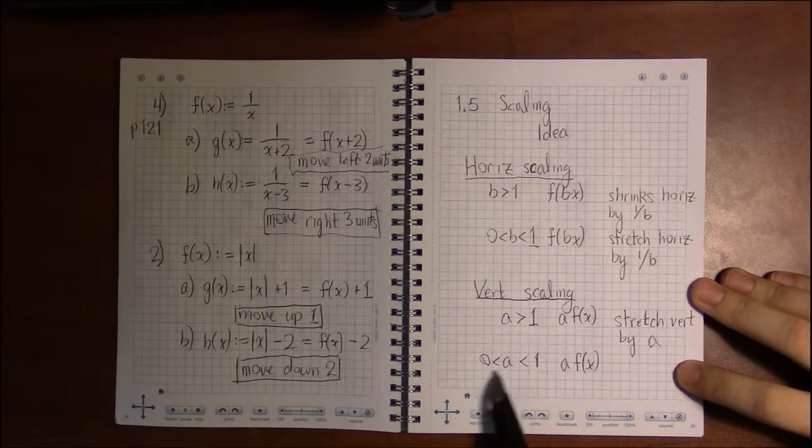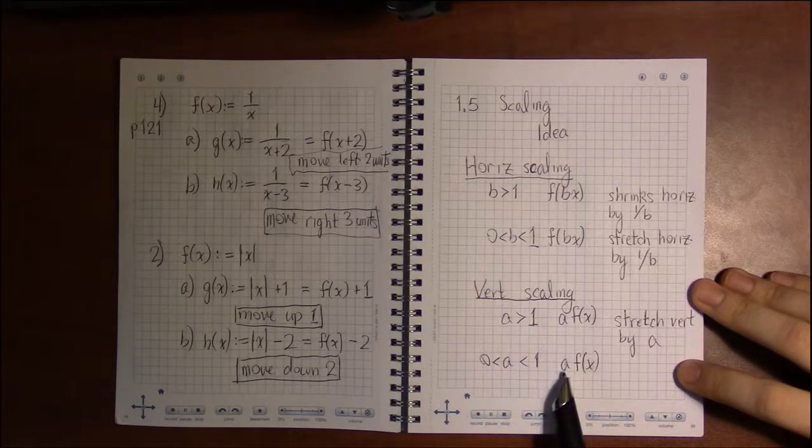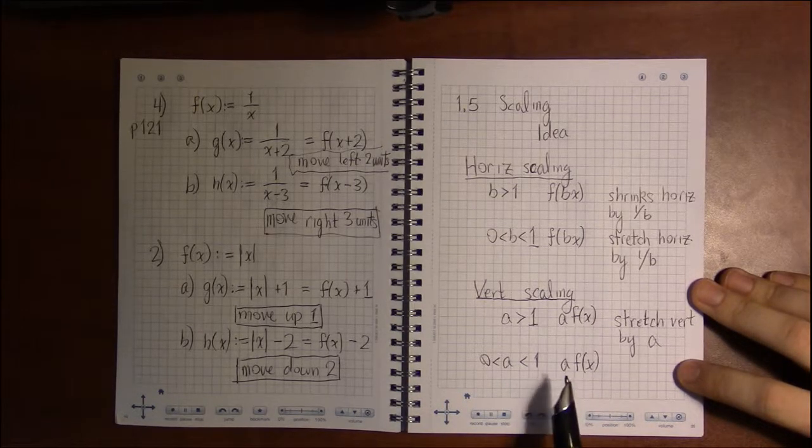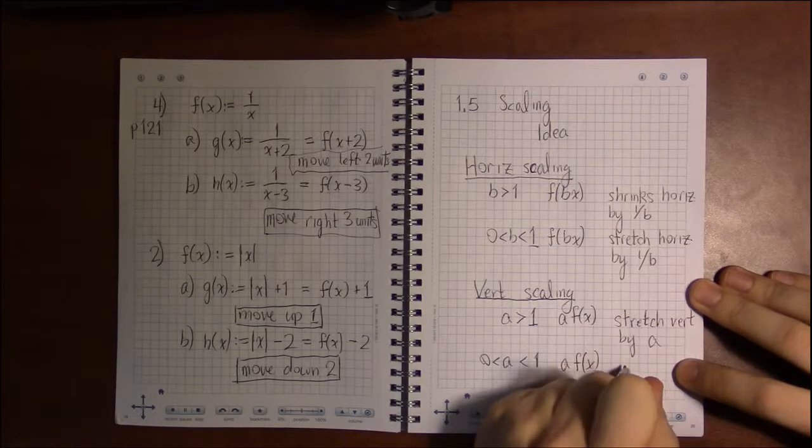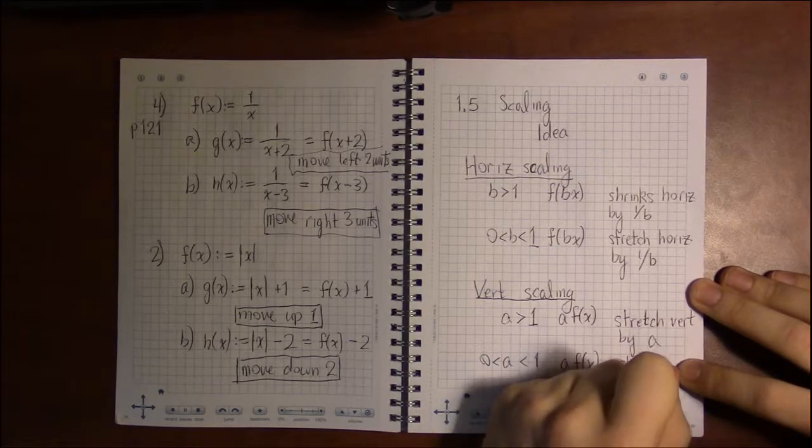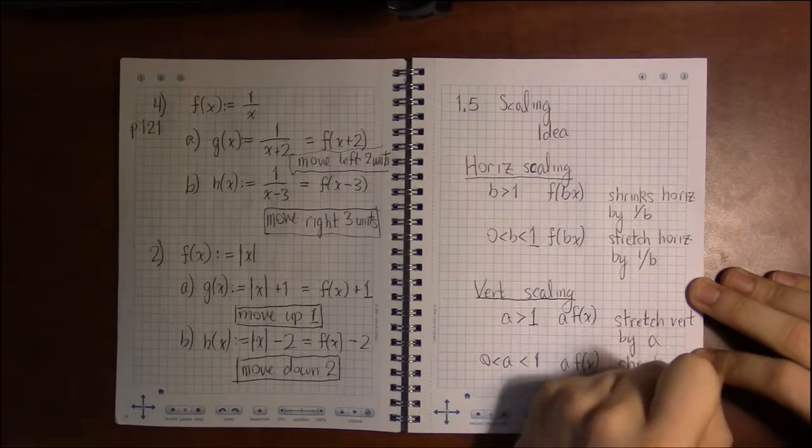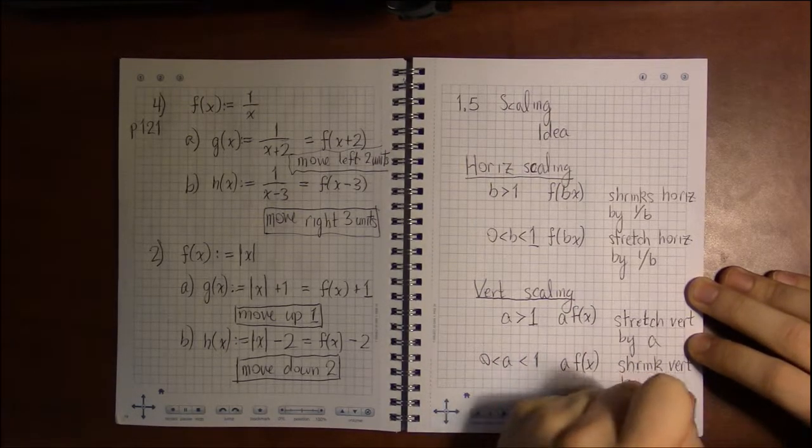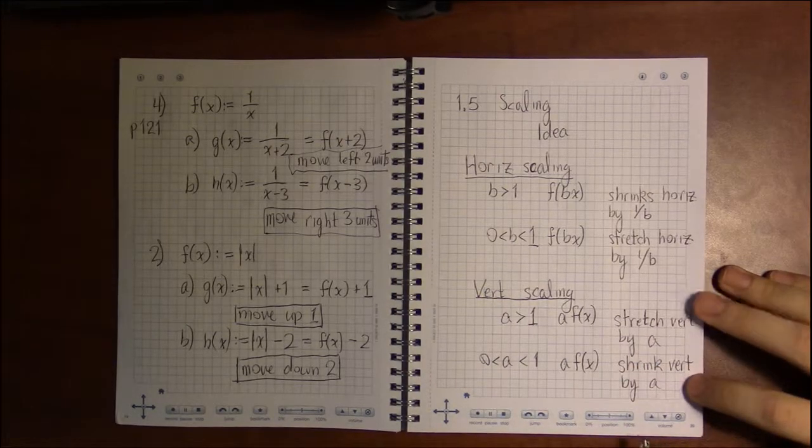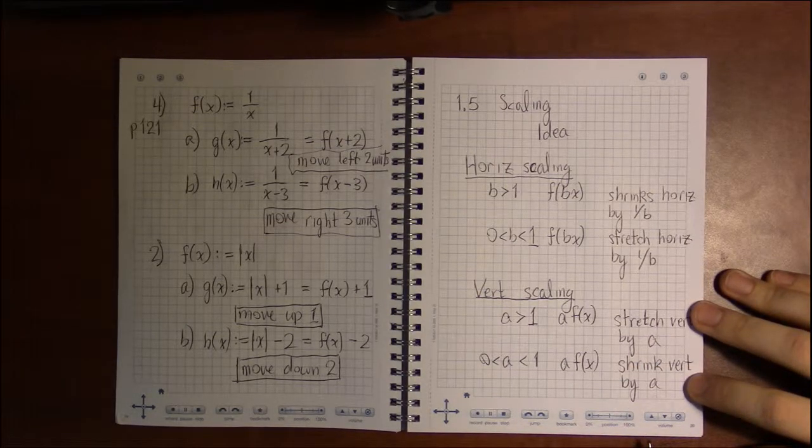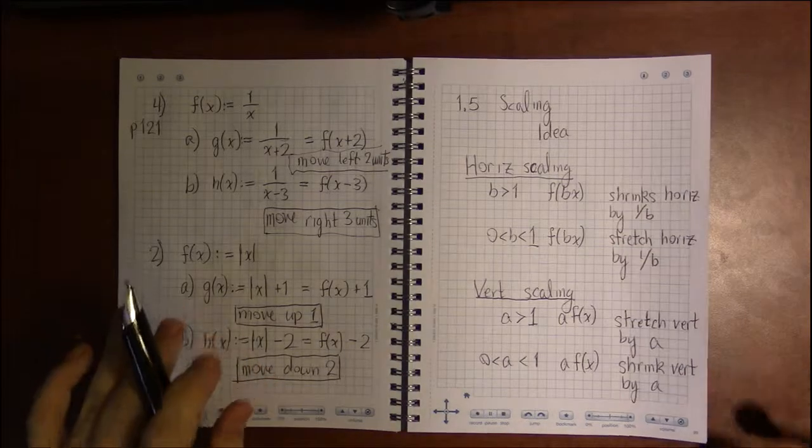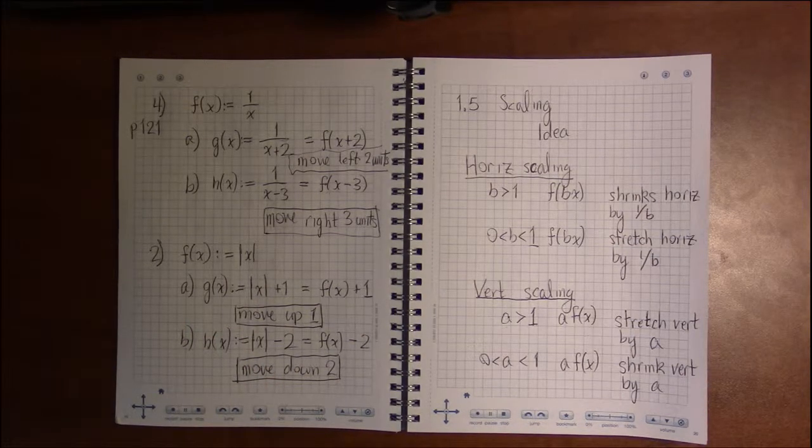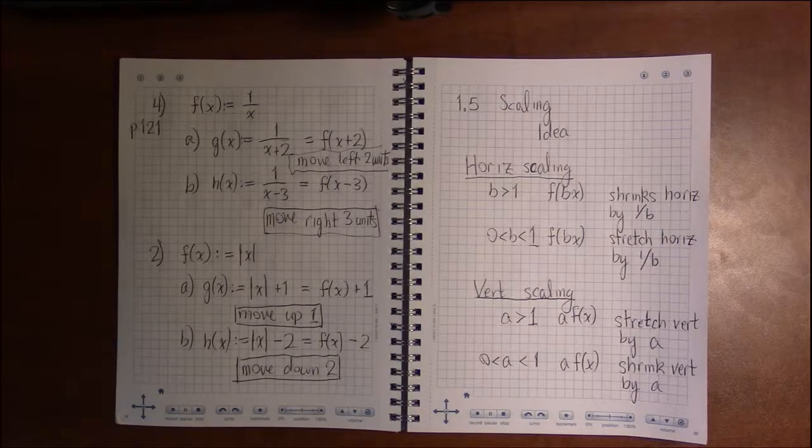On the other hand, if a is between 0 and 1, if it's like a half or a quarter or a third, you're going to be shrinking the y values, so shrinking vertically by a factor of a again. So let's take a look at some examples of that.